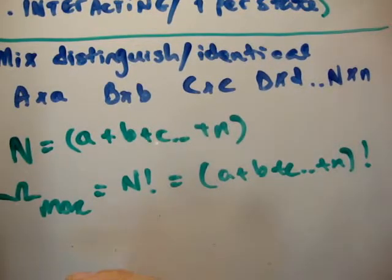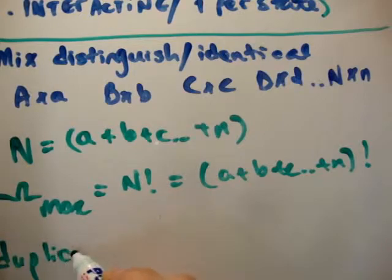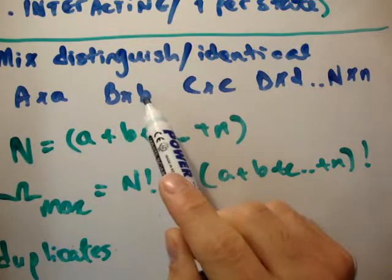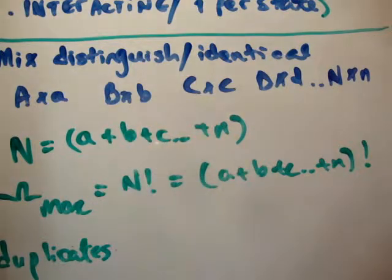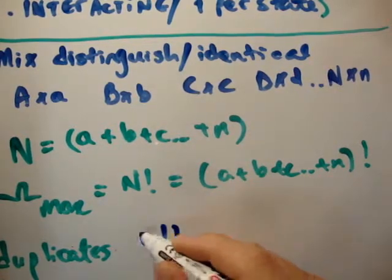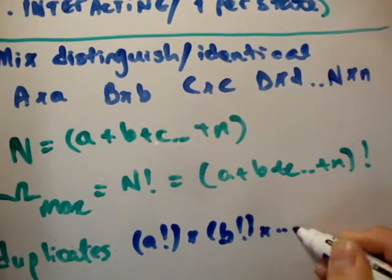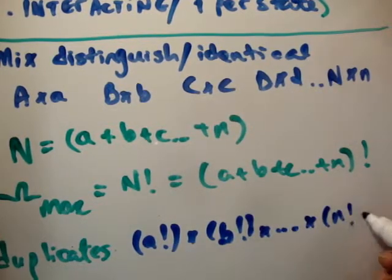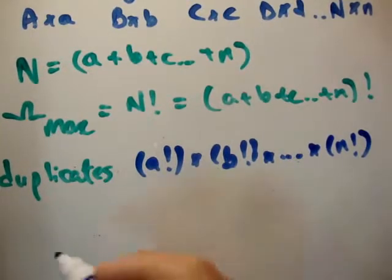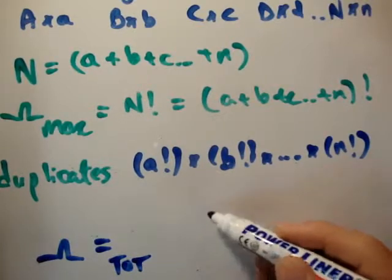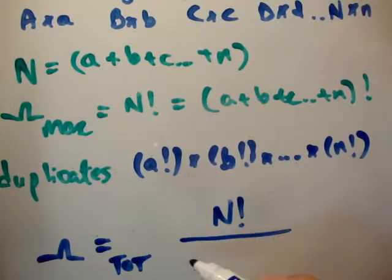Okay? But we have duplicates. Namely, we have small a duplicates of capital A, we have small b duplicates of capital B, and so on. So the duplicates, well, we have small a factorial multiplied by small b factorial multiplied by the whole way up to small n factorial. So the total multiplicity is equal to N factorial over pi N sub S factorial.